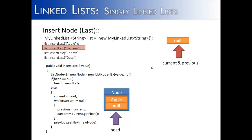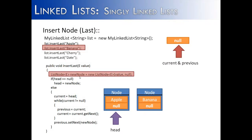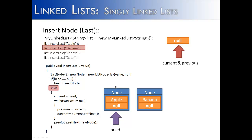Next we're going to insert Banana. We create the node Banana — notice its next value is null, and so too is the head's next value null. We check: is head equal to null? No, it's equal to the first node, so we're going to do the else statement.